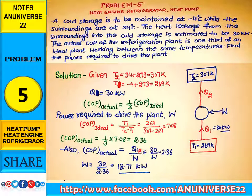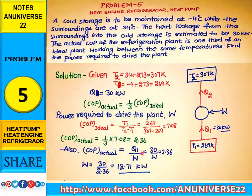COP actual equals the refrigeration effect divided by work done. Q1 is given as 30 kW and COP actual is 2.36, so W equals 30 divided by 2.36, which gives 12.71 kW. This is the power required to drive the plant.